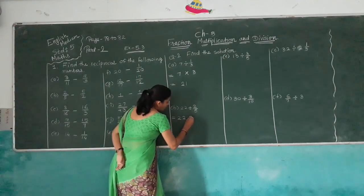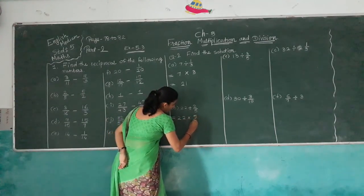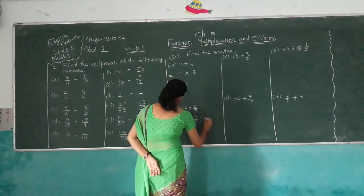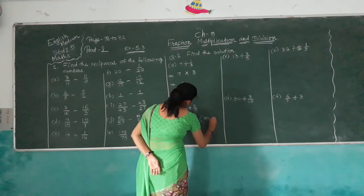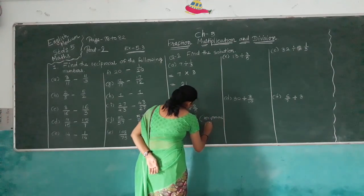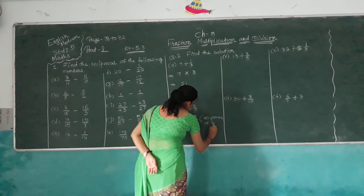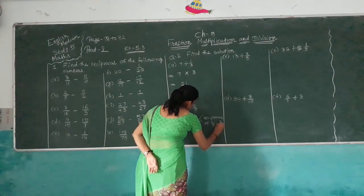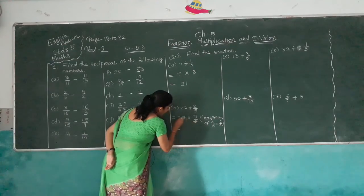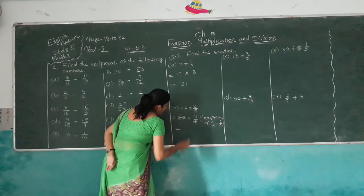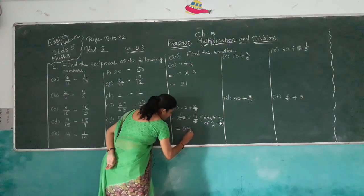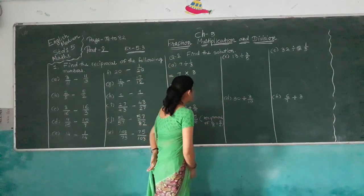Next: 22 divided by 2/5. The reciprocal of 2/5 is 5/2. So 22 multiplied by 5/2: 2 goes into 22 giving 11, and 11 multiplied by 5 is 55. The answer is 55.